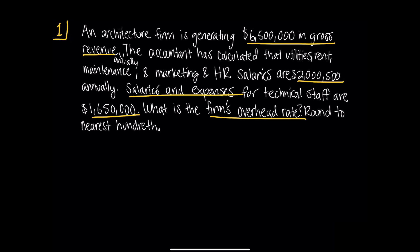Number one: an architecture firm is generating $6,500,000 in gross revenue annually. The accountant has calculated that utilities, rent, maintenance, marketing, and HR salaries are $2,500,000 annually. Salaries and expenses for technical staff are $1,650,000. What is the firm's overhead rate? Round to the nearest hundredth.